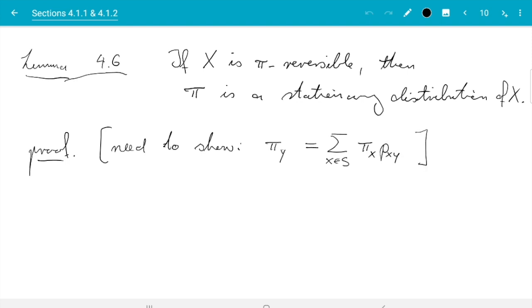And written component wise, what we need to check is that if we just write pi here without the time t plus one, that pi_x equals sum_y in S p_yx pi_y. That's what we will need to check. So let's switch back to our current section.